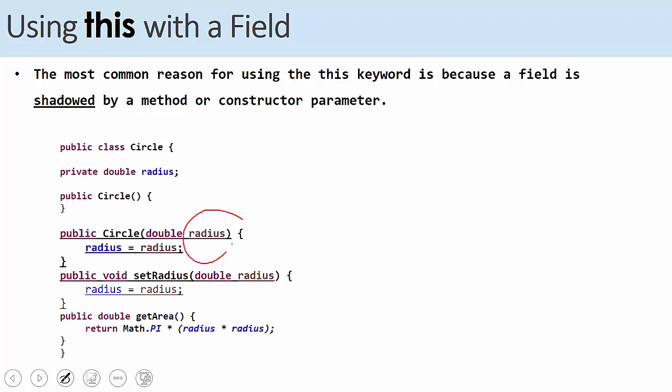When you have a parameter name in a constructor or in a method that is exactly the same as the instance variable name. If you look at the constructor here, radius inside the constructor in this line, we have two radius words. So which one is which? Which is the radius with the instance variable and which one is the one that is passed by the constructor caller?